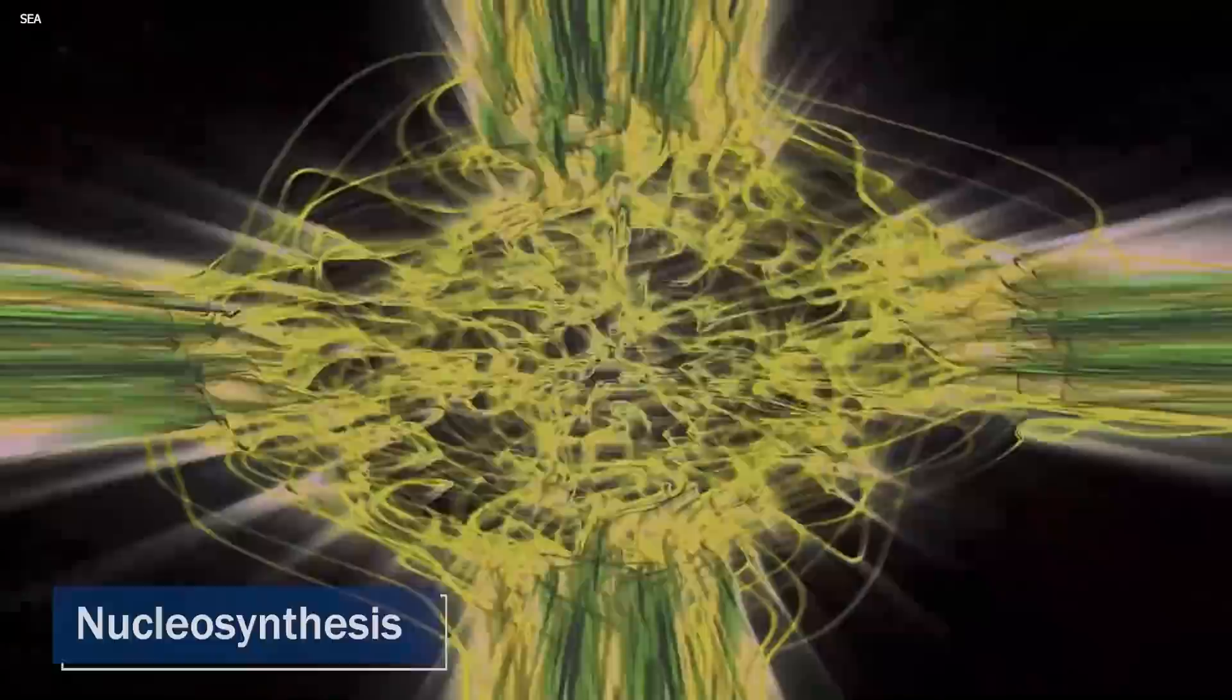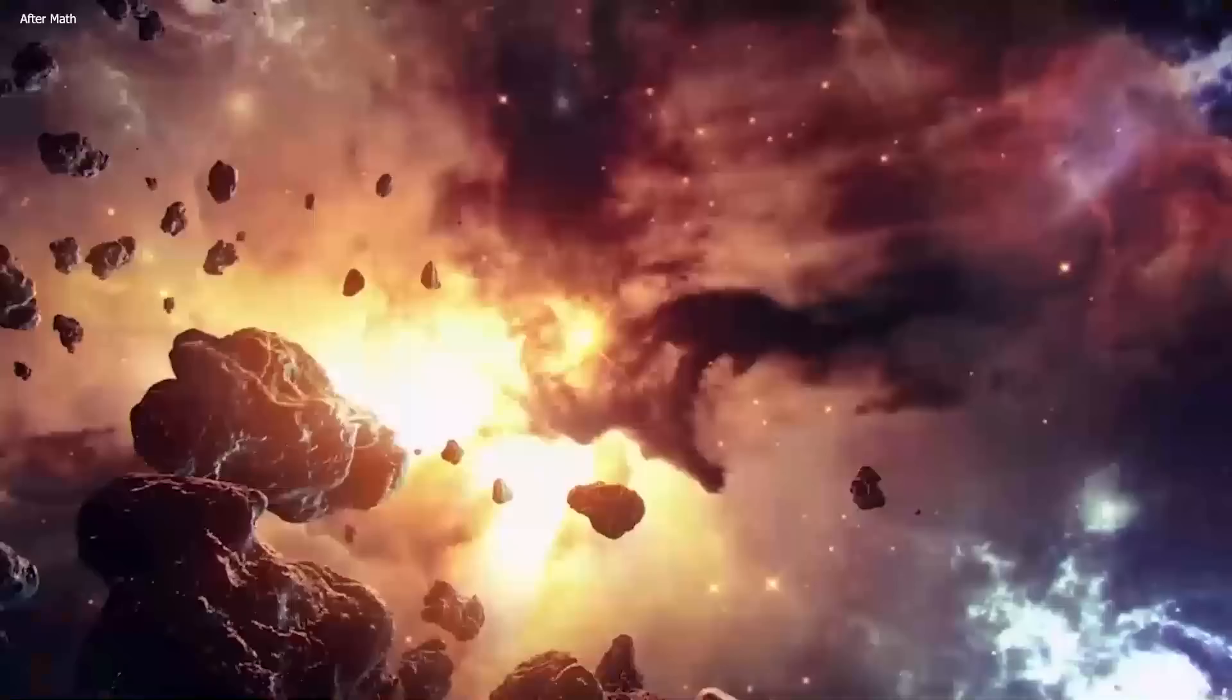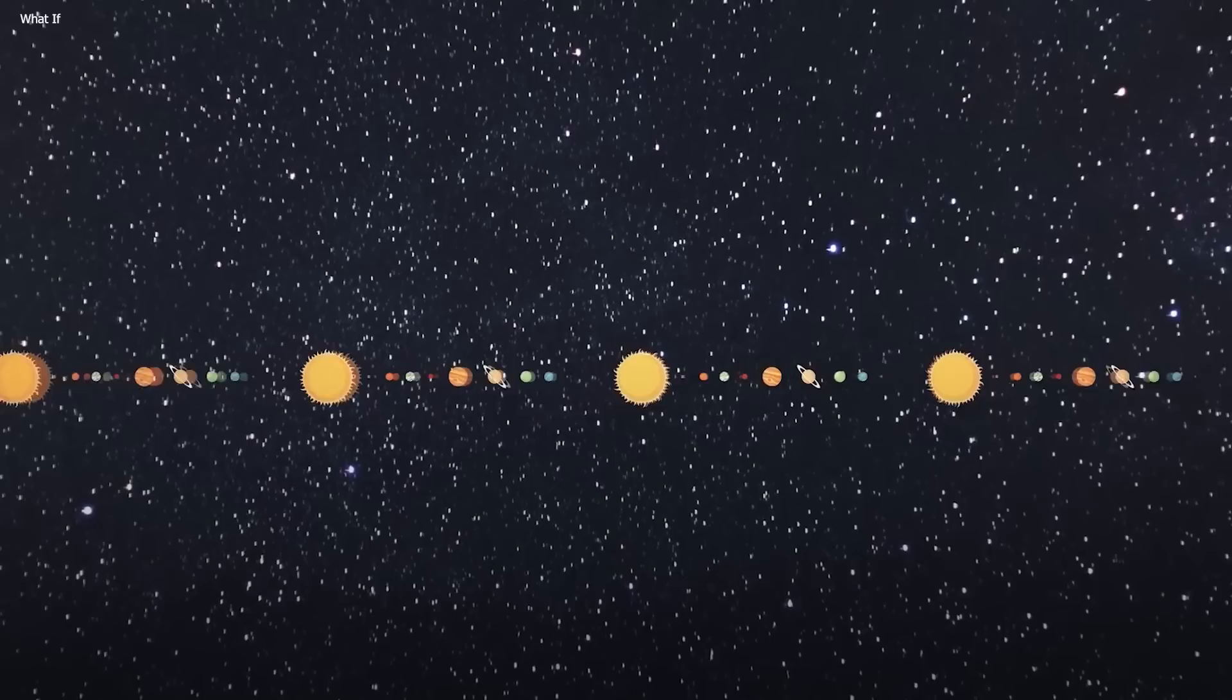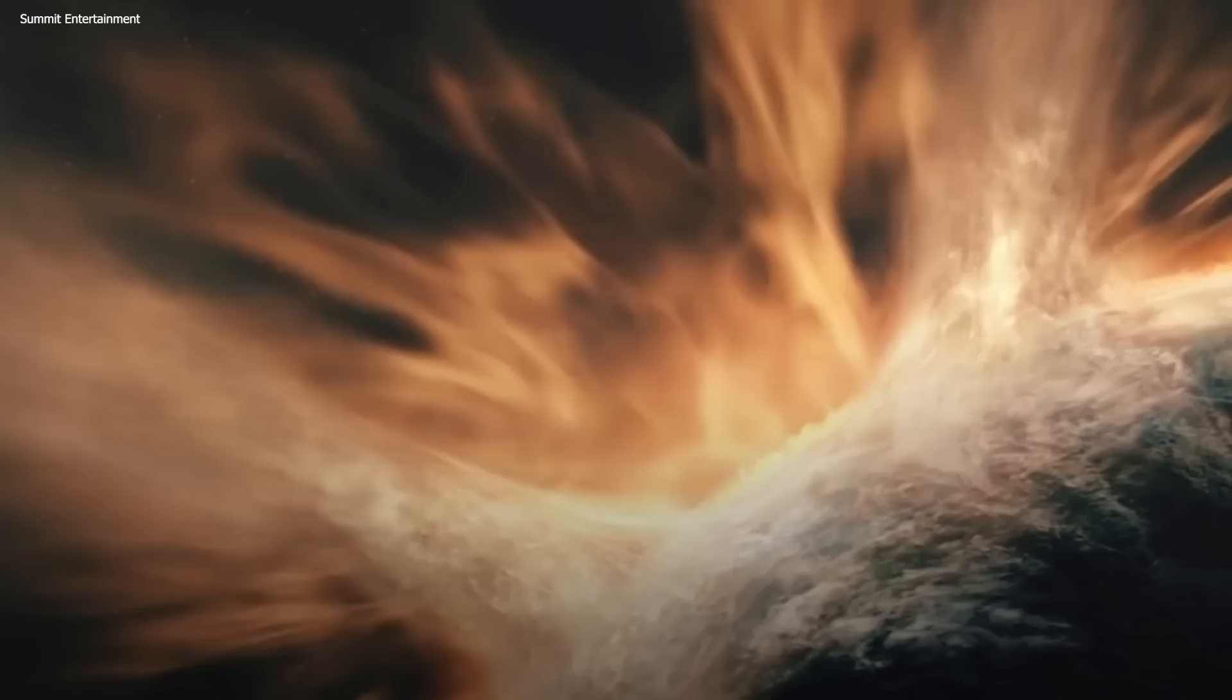The explosion of a supernova also creates a lot of heavy elements, such as iron, nickel, and gold. These elements are created through the process of nucleosynthesis, which occurs during the intense heat and pressure of the explosion. All of the elements are then scattered into space, where they can be incorporated into future generations of stars and planets. So it's kind of like one star dies to make space for the ones that come in the future.